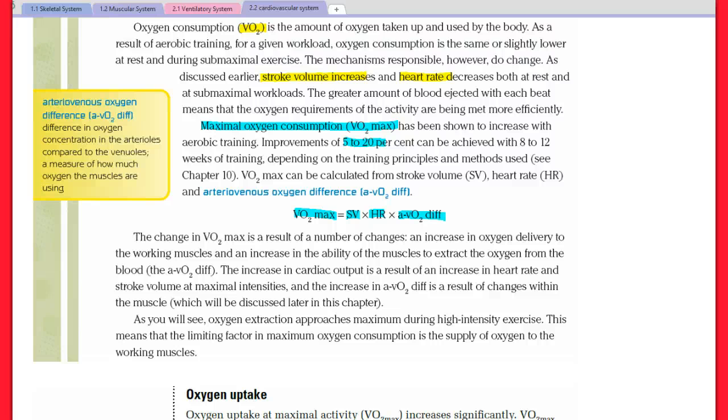The change in VO2 max is a result of a number of changes. There's an increase in oxygen delivery to working muscles, an increase in the ability of the muscles to extract oxygen from the blood, so that's AVO2 difference, and then increase in cardiac output, which results from heart rate and stroke volume at maximal intensities being able to increase.